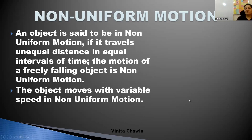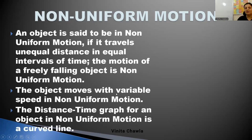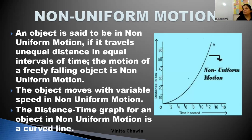The object moves with variable speed in non-uniform motion. The speed of the object is changing in non-uniform motion. The distance-time graph for non-uniform motion is a curved line. Sometimes the object covers less distance, sometimes it covers more distance in less time — so speed is changing.